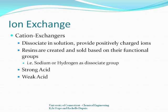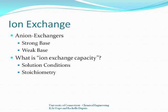Strong acid cation exchangers have an exchange capacity that is independent of solution pH because they dissociate well. Exchange capacity refers to the amount of ions a resin can exchange before being exhausted. Since ions are exchanged in a chemical reaction that follows the laws of charge balance, if we want to get rid of an ion like calcium with a +2 charge and replace it with a +1 charged sodium ion, we'll need two sodium ions for every calcium ion. This means two sites on the resin polymer will be exhausted for every molecule of solution that passes through it.